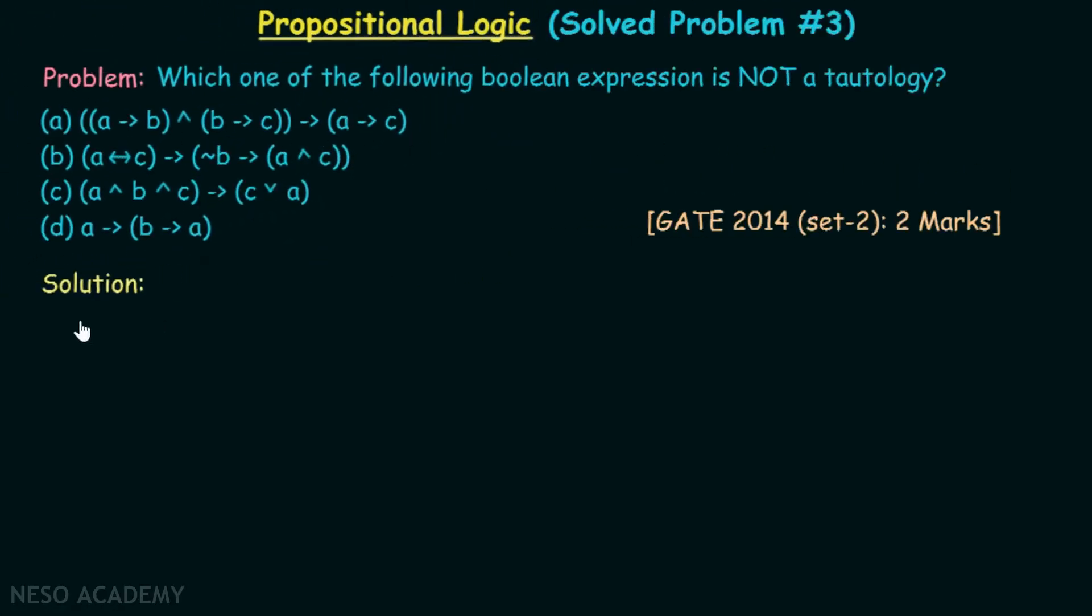Let's consider the first expression. It is (A implies B) and (B implies C) implies (A implies C).